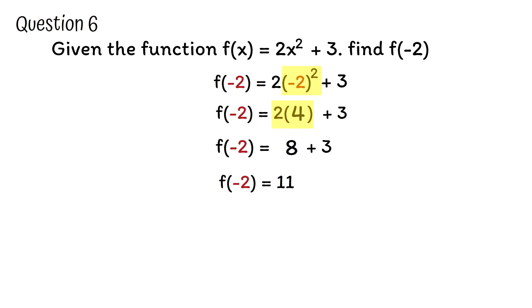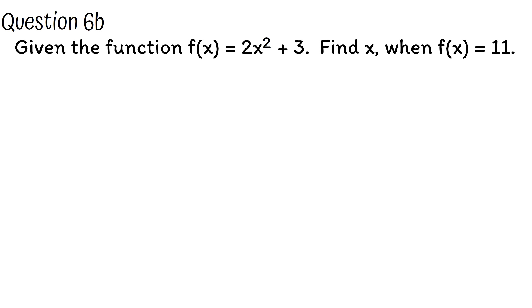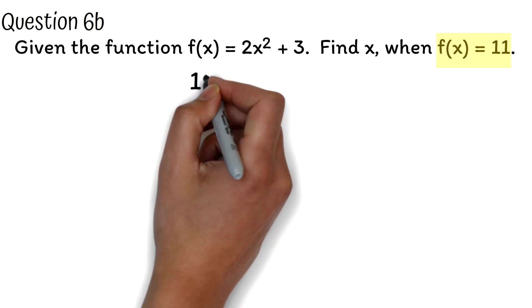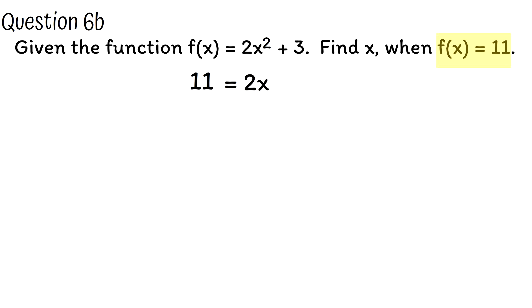Let's look at a common twist to this type of function question. Question 6b. Given the function f(x) = 2x² + 3, find x when f(x) is 11. This is basically the same question. Here, you are rather given the f(x) value. A lot of students assume this is the x value. So here, we will replace the f(x) with 11. We have 11 = 2x² + 3. Now we will solve for x.